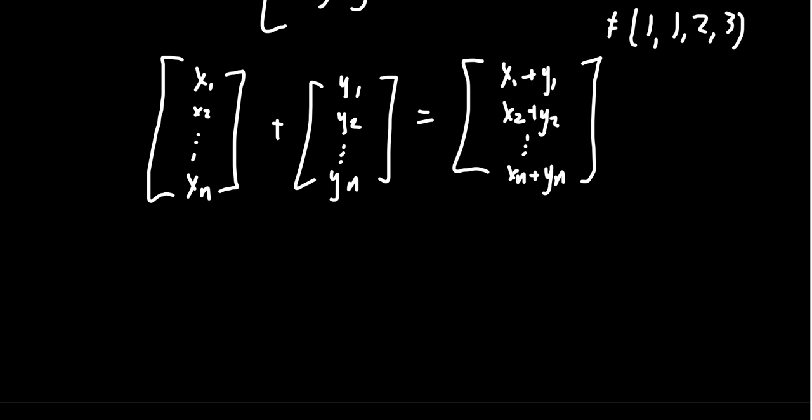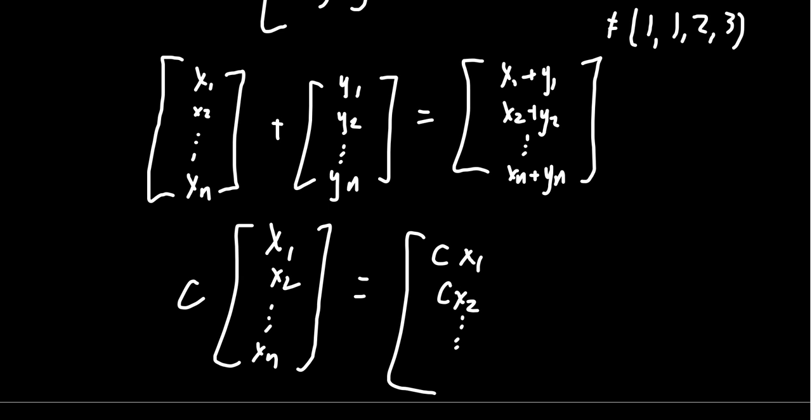And how does one scale a vector? Like if you have some scalar c and you times it by the vector x1, x2, all the way down to xn. Well scalar multiplication we defined as just times each of the components in the vector by the scalar c. So the scalar product would look like c x1, c x2, all the way down to c xn. And that's how we define the vector operations for these column vectors here.